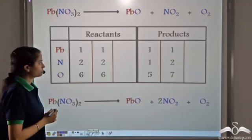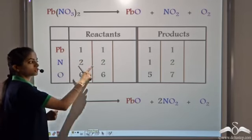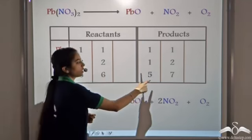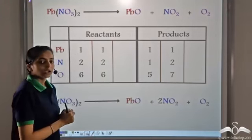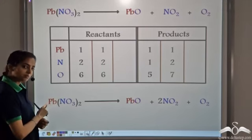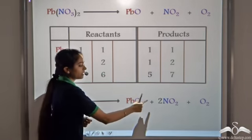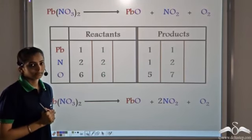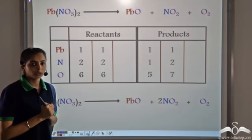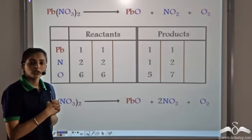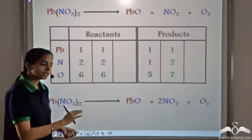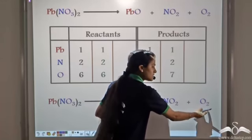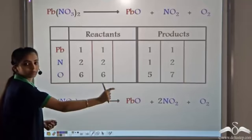Now look at the equation: Lead is balanced, Nitrogen is balanced, but Oxygen on the reactant side has 6 atoms and on the product side we have 7 atoms. We cannot just multiply Oxygen alone because it is present in 3 species. We remember that last time when we balanced an equation, all the other species got doubled. So now let's double the other species — we leave Oxygen aside since it is present alone and we will balance it in the end.